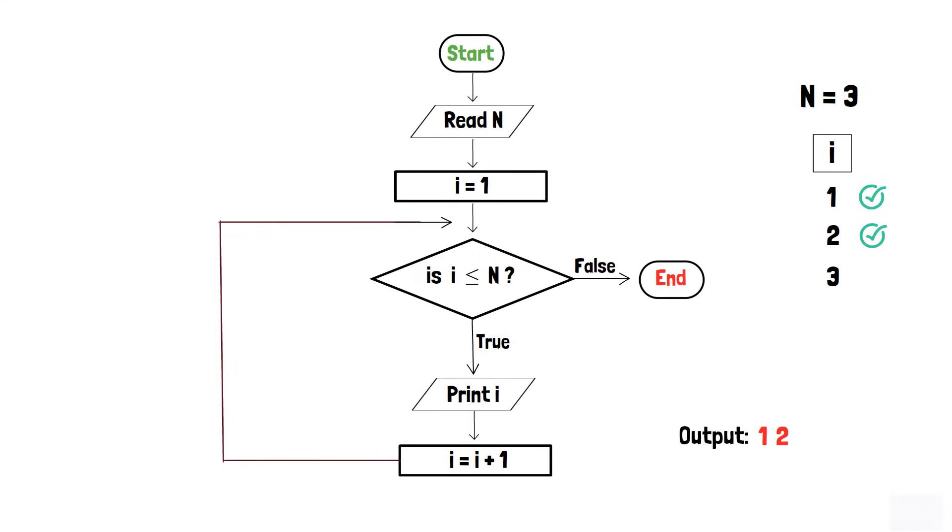Again, as i equals 3, the condition in the decision box is true. That is, 3 is less than or equals to 3, and 3 also gets printed and i becomes 4.